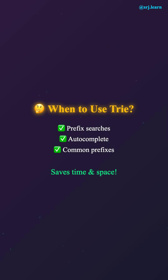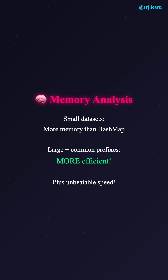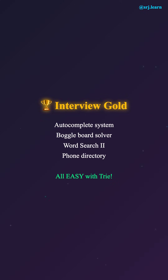When should you use a trie instead of a hash map? Use a trie when you need prefix-based searches, when you're building autocomplete features, or when you have many words with common prefixes — the trie will save both time and space. A trie uses more memory than a hash map for small datasets since each node stores pointers to children, but for large datasets with common prefixes, tries can actually be more memory efficient. Plus, the speed advantage for prefix operations is unbeatable.